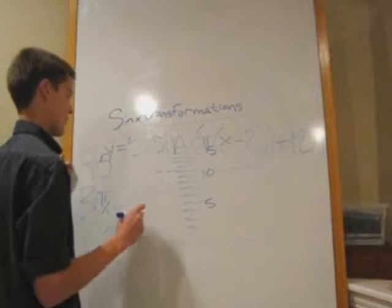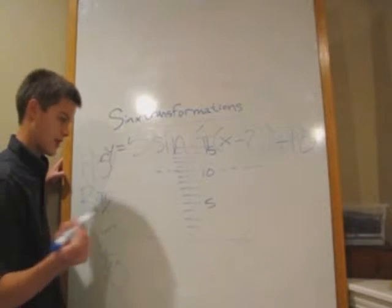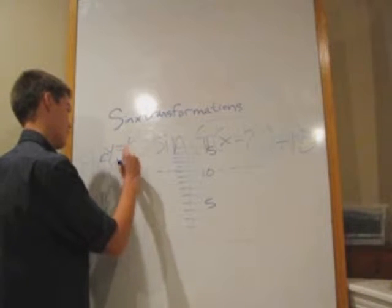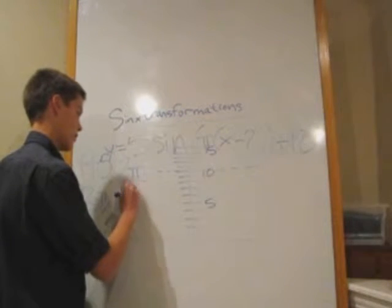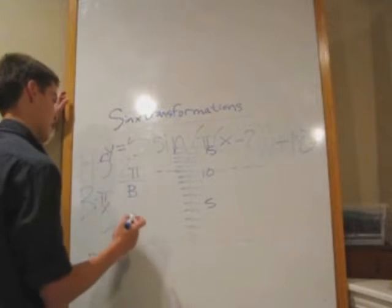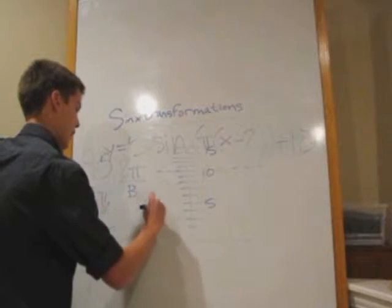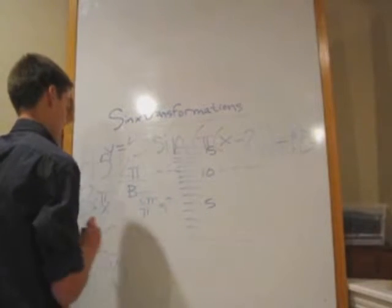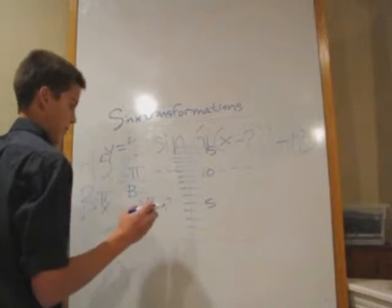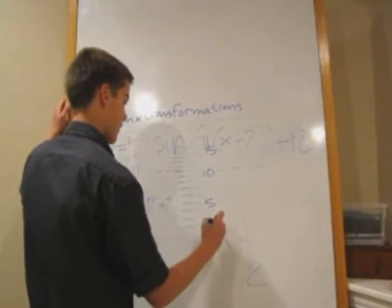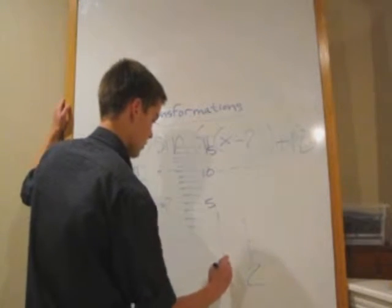And then to find the period of your new function, you will use the equation 2 pi over the b value. In this case, b is pi. So 2 pi over pi equals 2. So that means that your period is 2. So we'll draw 2 over here on the x-axis. And our midpoint will be 1.